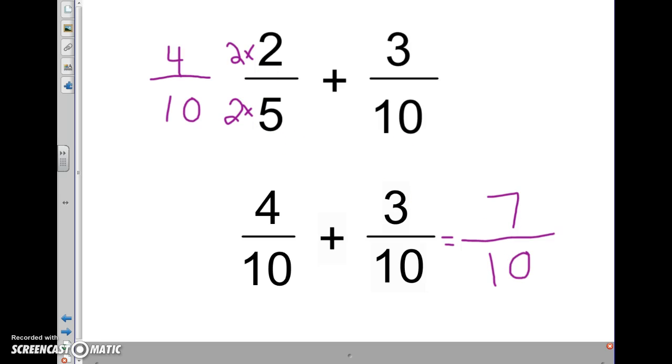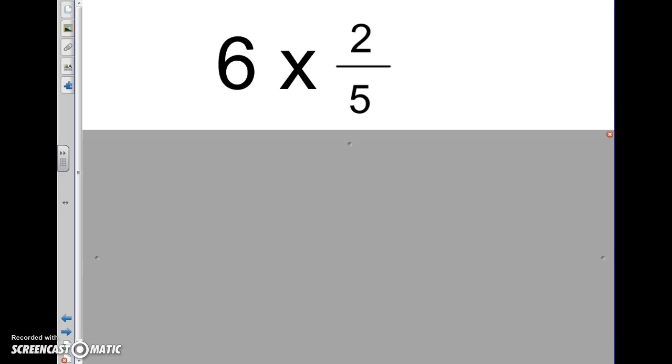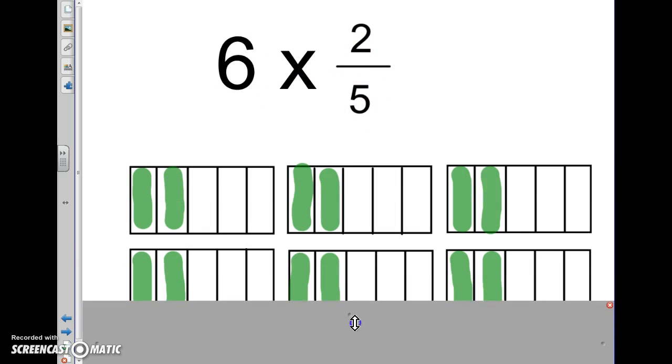And that's adding unlike fractions. And then for multiplying fractions, or multiplying a whole number times a fraction, we did this the other day to review. So it's like saying 6 groups of 2/5, or 2/5 of 6. Either way, it looks the same.